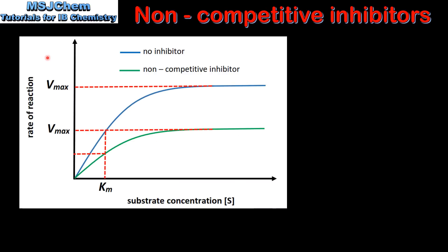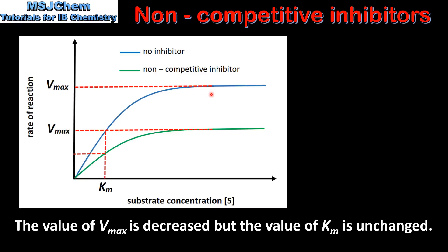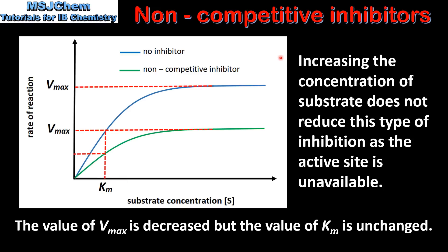Finally we look at the effect of a non-competitive inhibitor on the value of Vmax and the Michaelis constant Km. By looking at the graph we can see that the value of Vmax is decreased but the value of Km is unchanged. Increasing the concentration of the substrate does not reduce this type of inhibition, as the active site is unavailable.